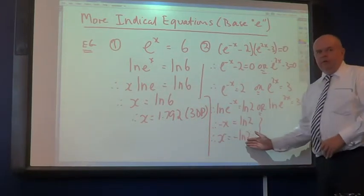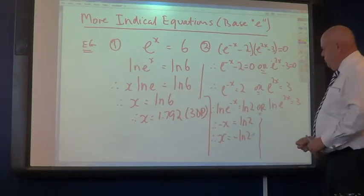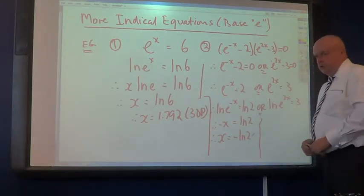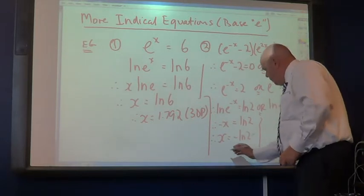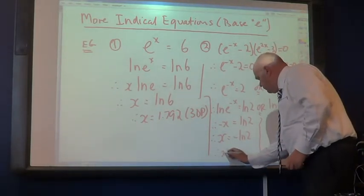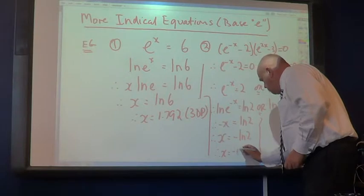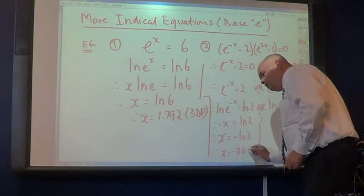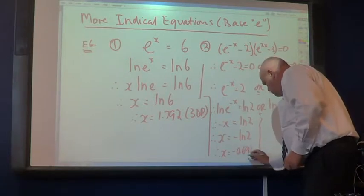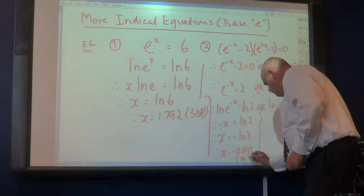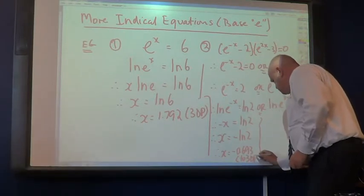Therefore, multiplying through by negative 1, we get x equal to negative ln 2. Sometimes, we're quite happy to leave it in that form. That's what we would call exact form. And I might do that on this occasion. But, I see someone else has calculated it for me. It's equal to negative 0.693, 3 decimal places.